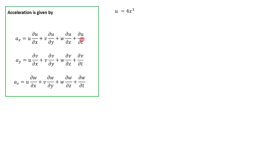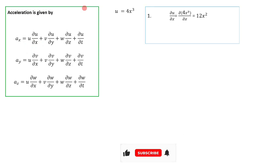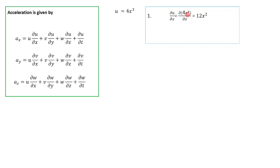To find ax, we calculate the partial derivatives of u. ∂u/∂x: differentiating 4x cubed partially with respect to x gives 12x squared. Since there is no y term, ∂u/∂y = 0. Likewise ∂u/∂z = 0, and ∂u/∂t = 0.